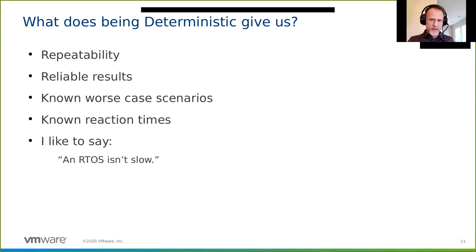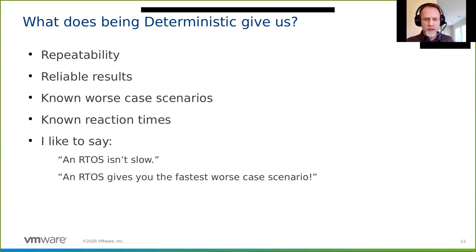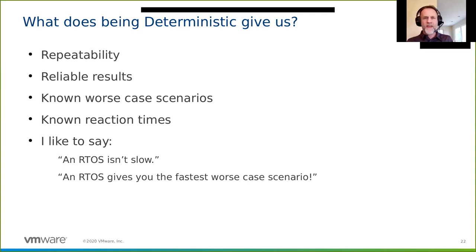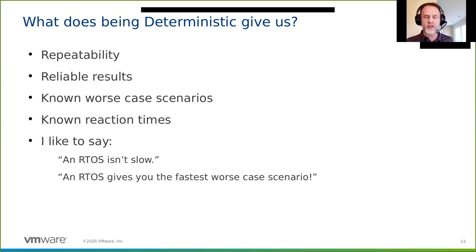I don't like to say that a real-time operating system is slow. I like to say it's the fastest worst-case scenario operating system, which means that compared to non-real-time systems, a real-time system will be faster when everything goes wrong. If you have another system that's fast 99.99% of the time, that 0.001% of the time it could be really, really slow and fail your system.